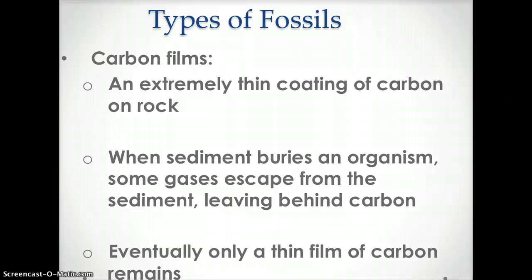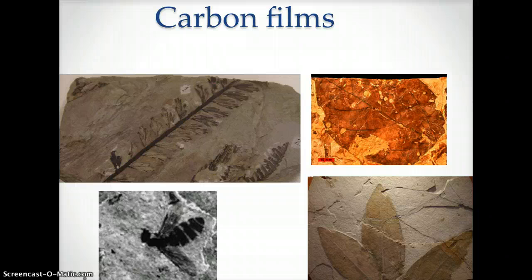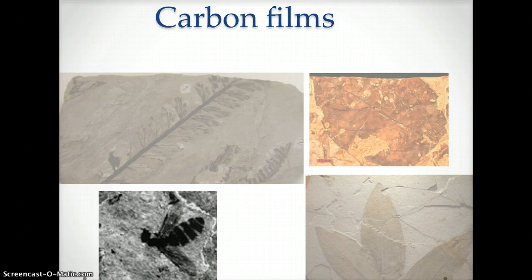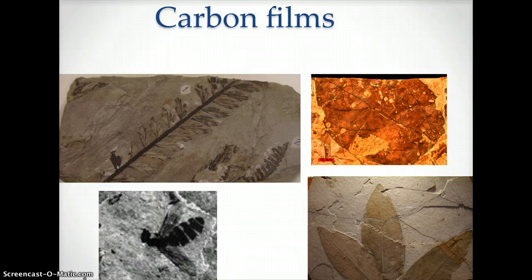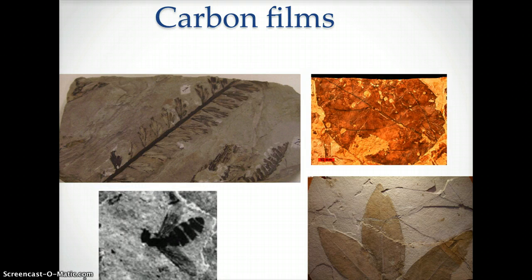Carbon films are fossils that consist of a very thin coating of carbon on rock. When sediment buries an organism, some gases escape from the sediment, leaving behind carbon. After a very long period of time, only a thin film of carbon remains. The images on the right and top left are carbon films of plants. The image on the bottom left is a carbon film of an insect.